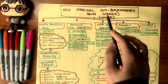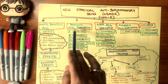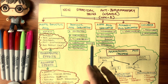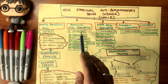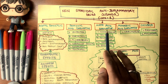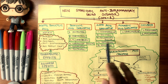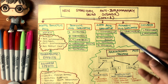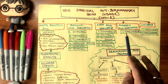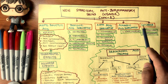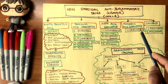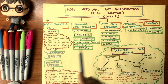NSAIDs at COX-1 include: acetylsalicylic acid (aspirin); propionic acid derivatives — ibuprofen, naproxen, flurbiprofen, naproxen sodium, and ketoprofen, with ibuprofen and naproxen being commonly used today; acetic acid derivatives — indomethacin, sulindac, diclofenac sodium, and ketorolac, with diclofenac sodium and ketorolac being common nowadays; alkanoic acid derivatives — nabumetone; and oxicams — piroxicam and meloxicam, though these are less common.